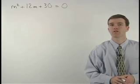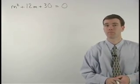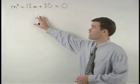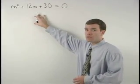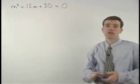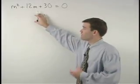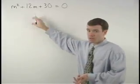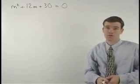To solve this equation by completing the square, we need a perfect square trinomial on the left side of the equation. Notice that the trinomial we have doesn't even factor, so we know it's not a perfect square trinomial.